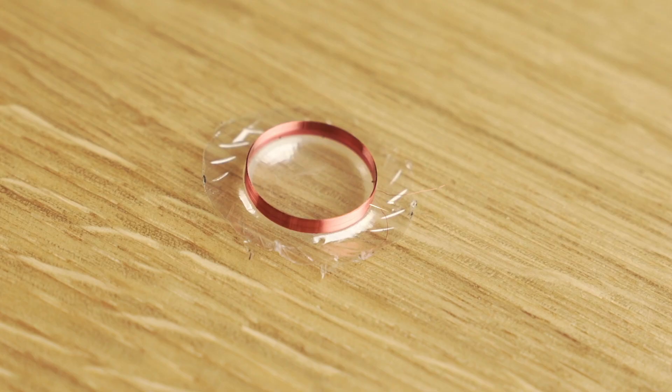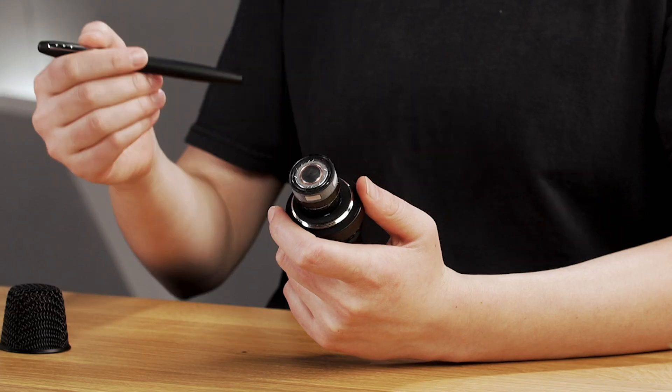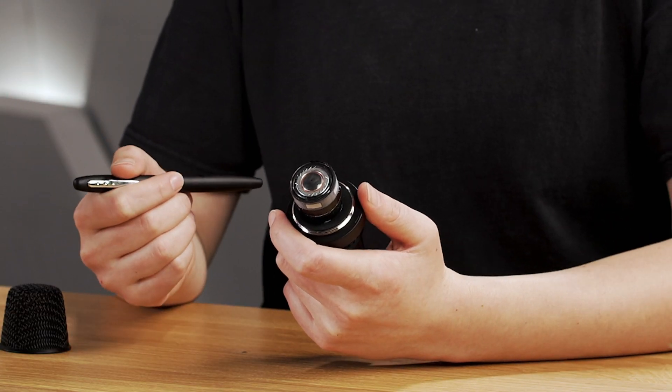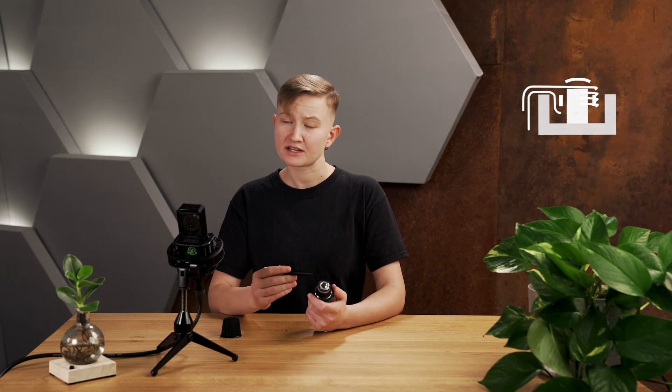A dynamic microphone has a pretty robust capsule. The back of the membrane is attached to a coil of wire. Both the diaphragm and the coil move back and forth according to incoming sound waves. The coil is placed inside a magnetic field, and when it moves, an electrical signal is induced. It may remind you of the way a loudspeaker works — and that's because they actually both function with the same acoustic principle.